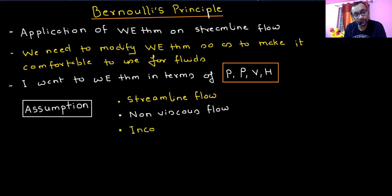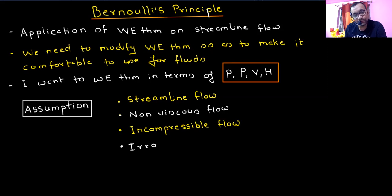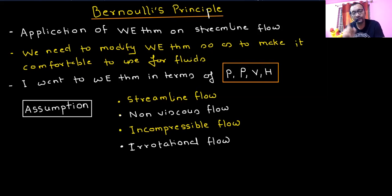The third assumption is incompressible flow. The fourth is that it should not be a rotational flow — in other words, irrotational flow. A rotational flow is like a tornado, rotating around. This kind of flow is not included in Bernoulli's theorem because there are losses in those kinds of flows as well.